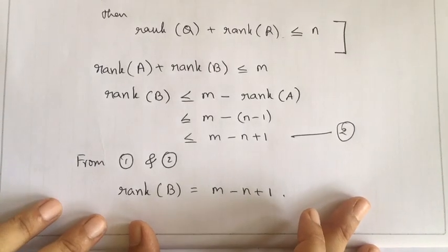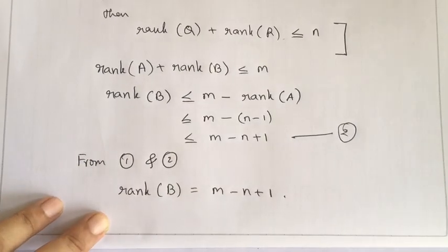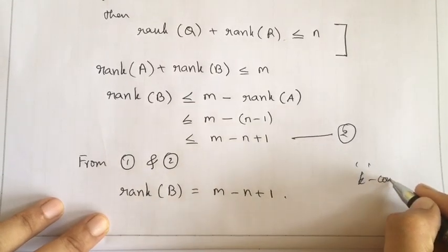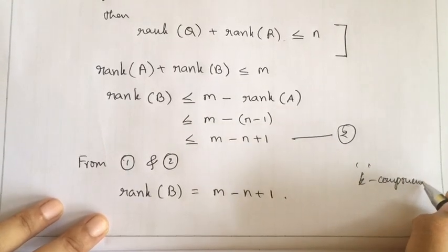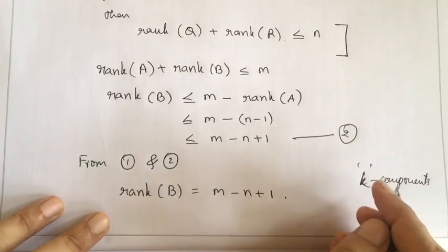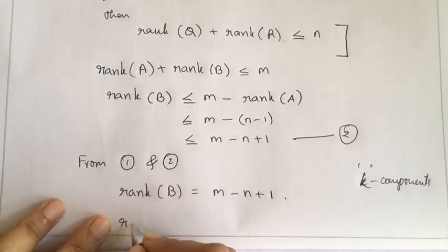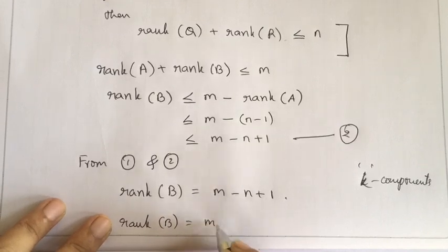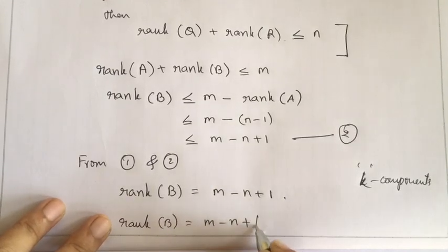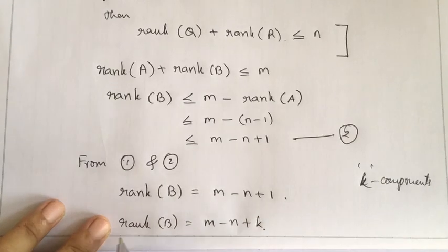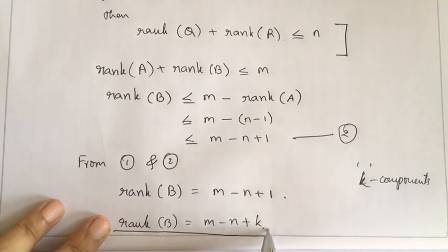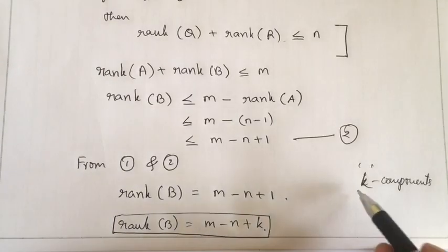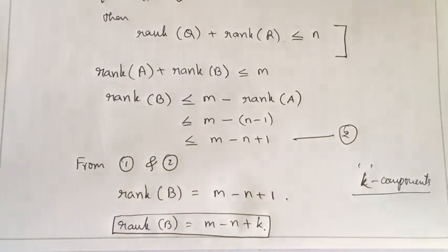For a disconnected graph G with k components, the rank of the circuit matrix B is m minus n plus k. So the rank of the cycle matrix is m minus n plus k for a graph with k components.